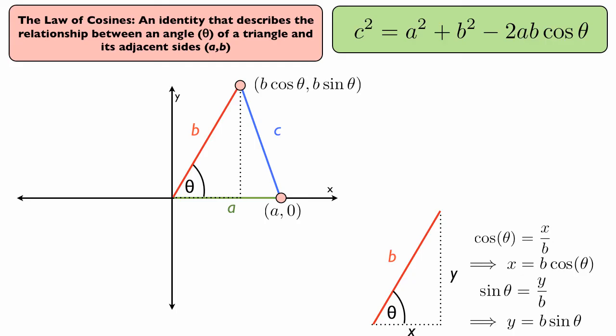Therefore, that point that we're looking for is b cosine theta, b sine theta. We found it using that triangle below.